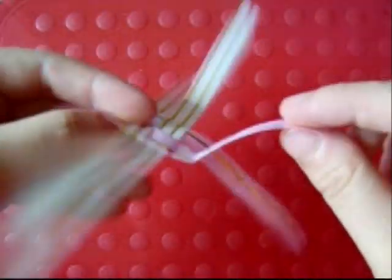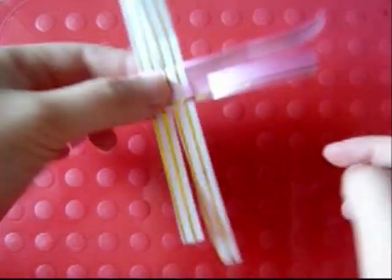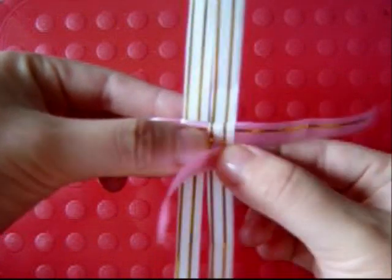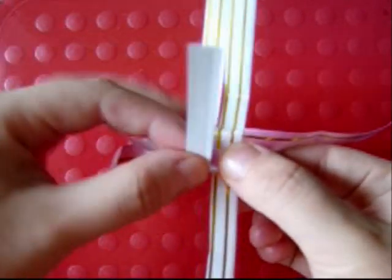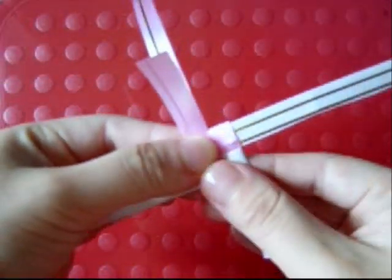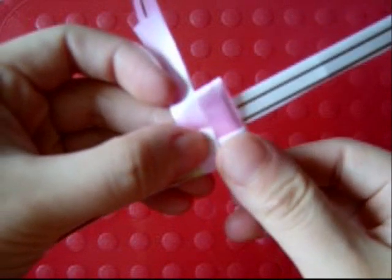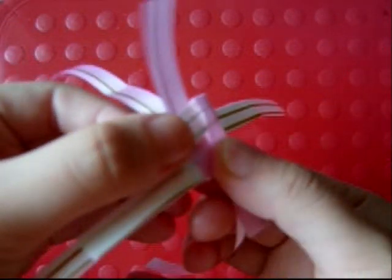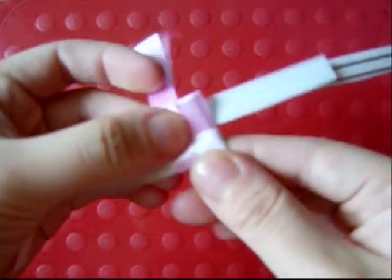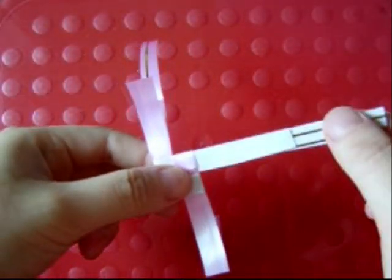Now turn it over and take that same strip, so it's the shorter strip, and do the same thing. So the last one will go over that and inside here. So now all the strips are aligned with each other.